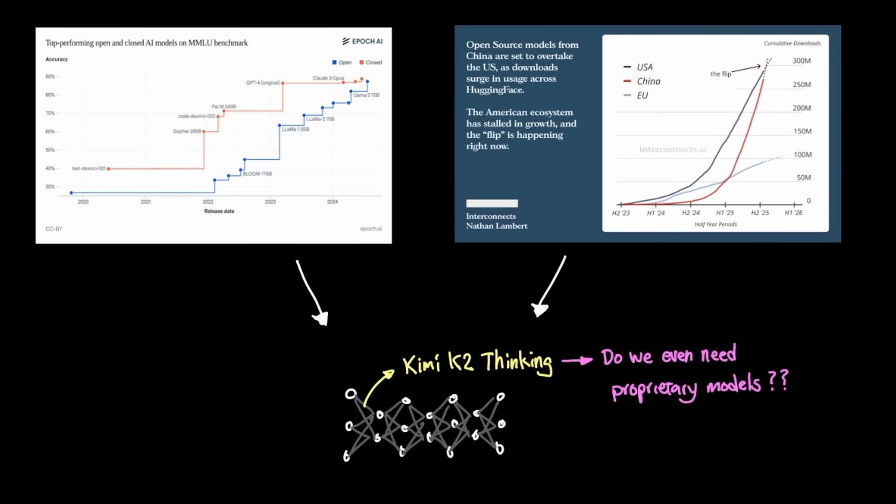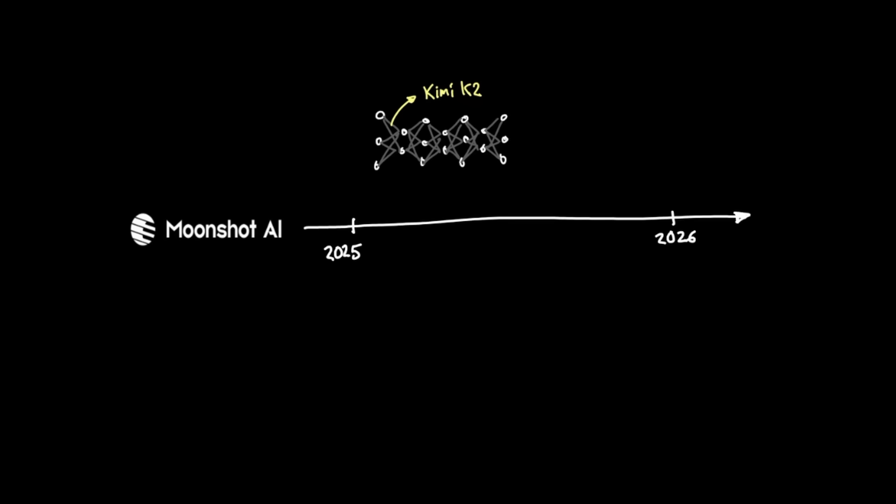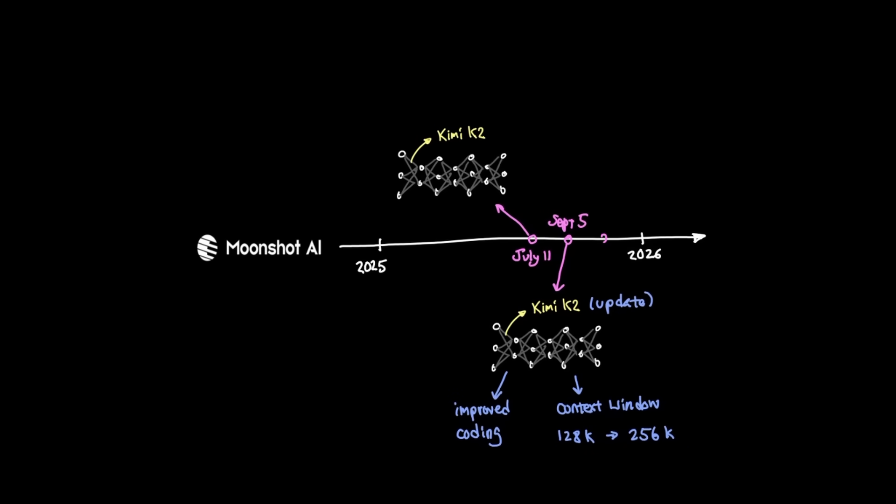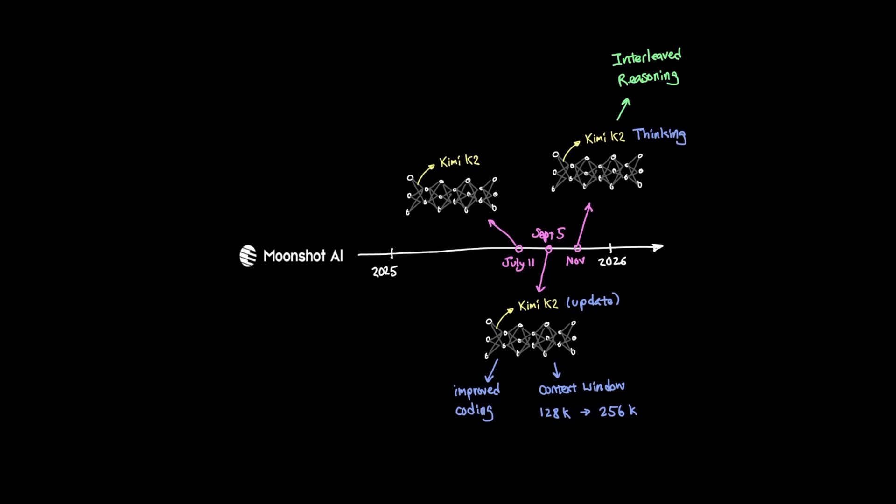Let's actually look at the model a little bit closer. Moonshot initially released the Kimi K2 model back in July 11, 2025. And on September 5th, Moonshot released an update that improved coding performance and increased the context window from 128 to 256,000 tokens. And now Moonshot made one more iteration to their model and now it's equipped with thinking and more importantly, leveraging what's called interleaved reasoning. Now there's been a lot of confusion and misunderstanding regarding what interleaved reasoning is. So let's clear that up a little bit.